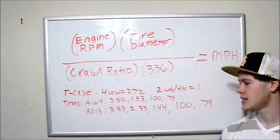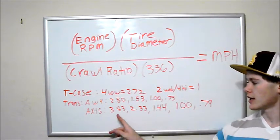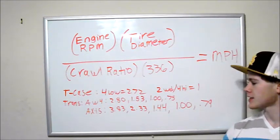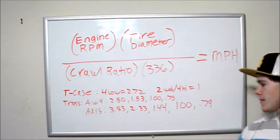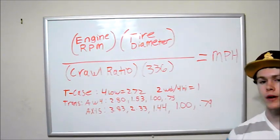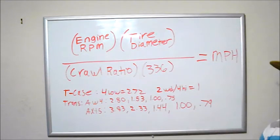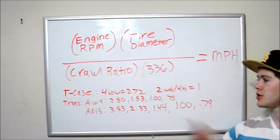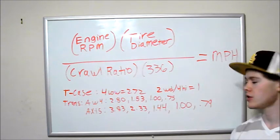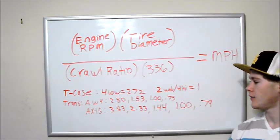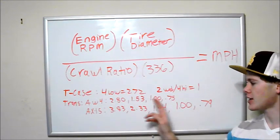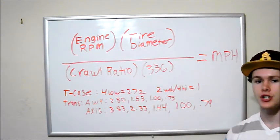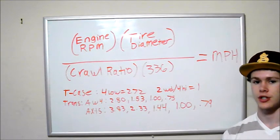If we're in an AX15 or a 5-speed, first gear is 3.83, second gear is 2.33, third gear is 1.44, fourth gear is 1.0, and fifth gear is 0.79. So again, if we're in 2-wheel drive, we substitute the 2.72 in our equation with a 1, and if we're in any gear other than first, you just take whichever gear you're in, and that ratio and substitute it for your first gear ratio.